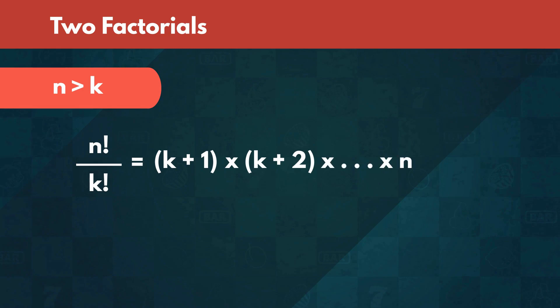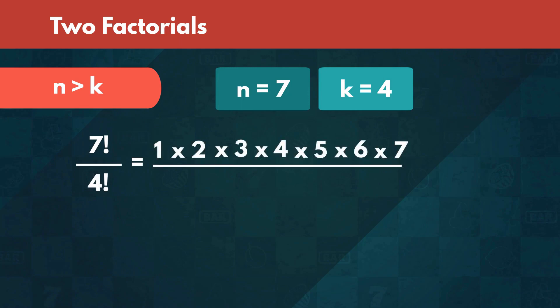Let's look at an example where n is 7 and k is 4. Then, 7 factorial over 4 factorial equals the product of the numbers between 1 and 7 over the product of the numbers between 1 and 4. We can simplify this by crossing out 1, 2, 3, and 4 since they occur in both parts of the fraction. Doing so leaves us with 5 times 6 times 7.